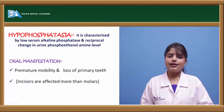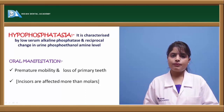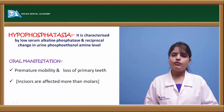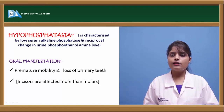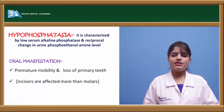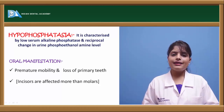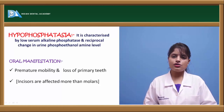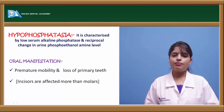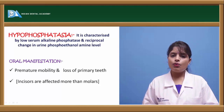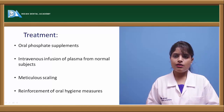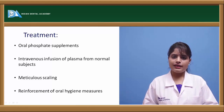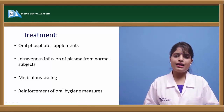Hypophosphatasia is associated with a decreased amount of serum alkaline phosphatase and a reciprocal increase in phosphoethanolamine in the urine. Oral manifestations include premature mobility, increased bone loss, destruction of the periodontium, and migration and loss of primary teeth, with incisors affected more than molars. Treatment involves plasma replacement with normal plasma, oral vitamin and phosphate supplements, increased scaling and root planing, and improved oral hygiene measures.